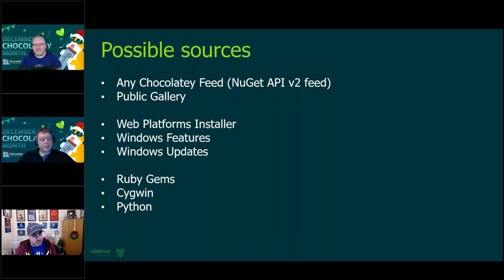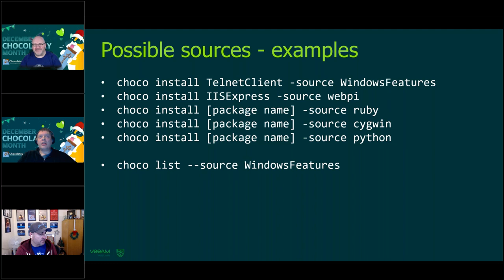The possible sources for Chocolatey can be any NuGet API v2 feed, the public Chocolatey community repository, Windows Platform Installer, Windows Updates, Windows Features, Ruby gems, Cygwin, and Python. You can do 'choco install --source windows-features' or install IIS Express from WebPI, or any Ruby, Cygwin, or Python package directly from Chocolatey. You can list all those packages with 'choco list --source windows-features' or webpi or whatever you need.